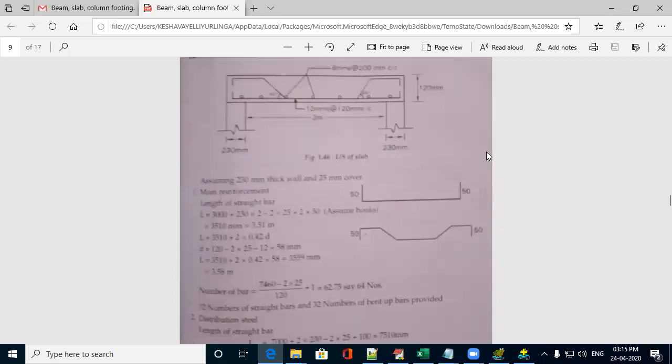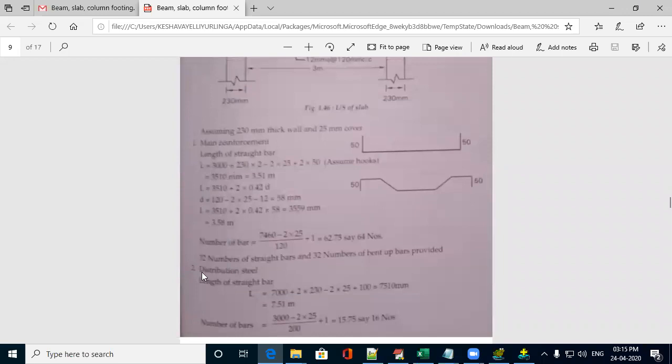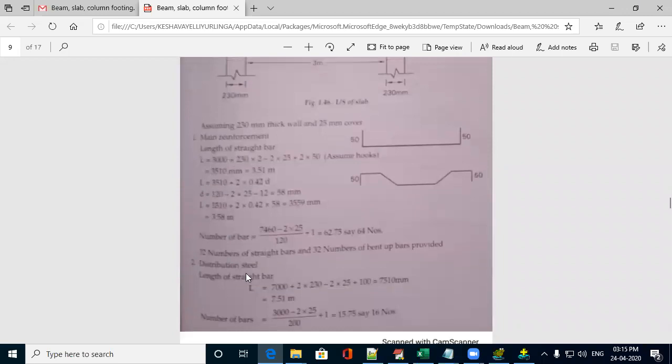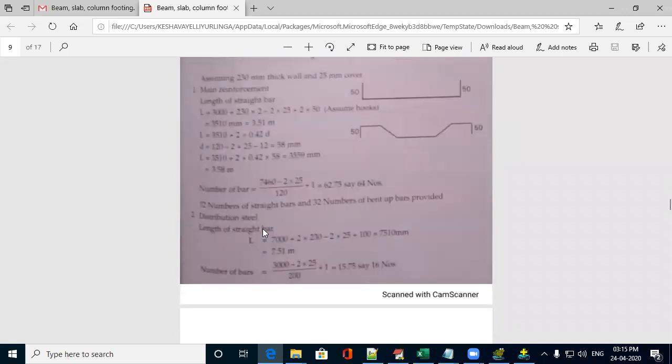Now, calculation of main reinforcement is done. To calculate the distribution bar detail, length of straight bar is 7000 plus 2 times the support thickness minus cover plus 100.